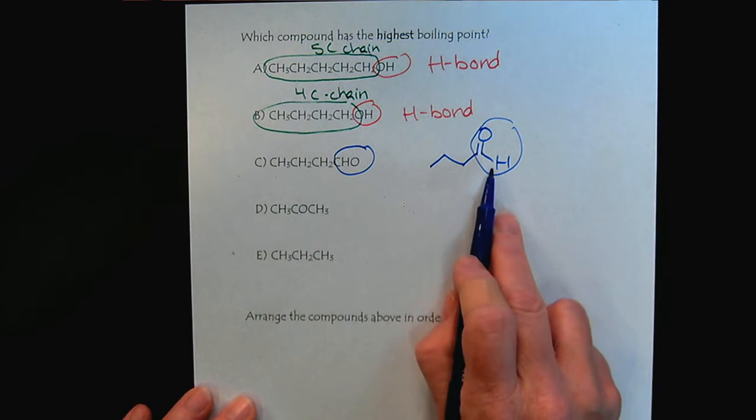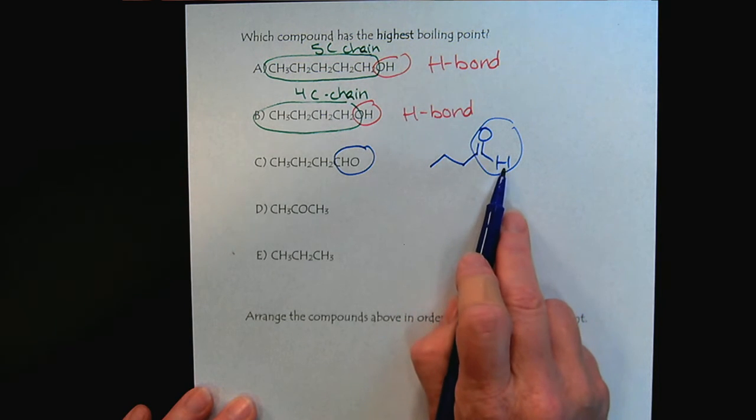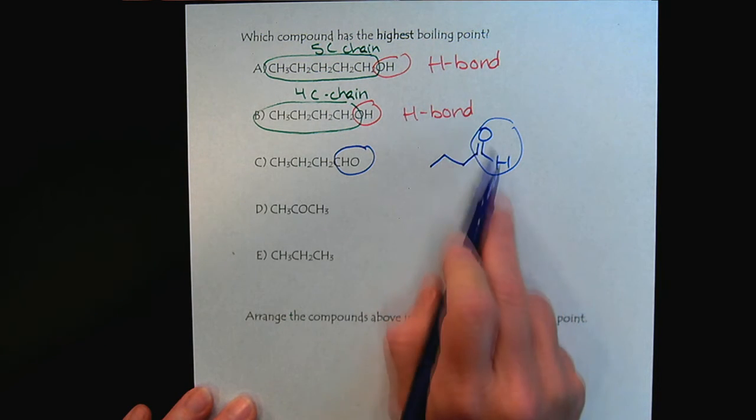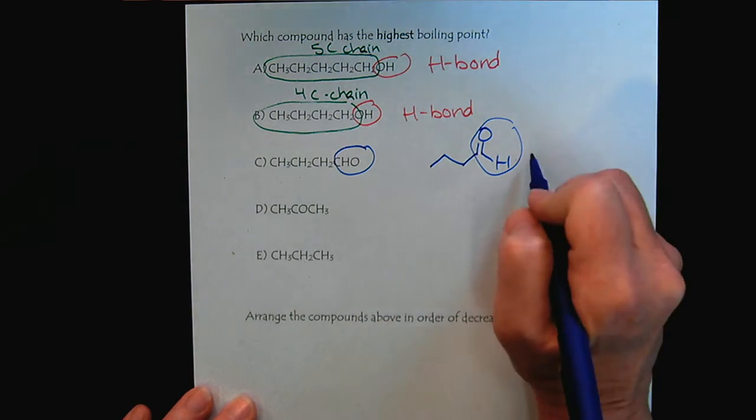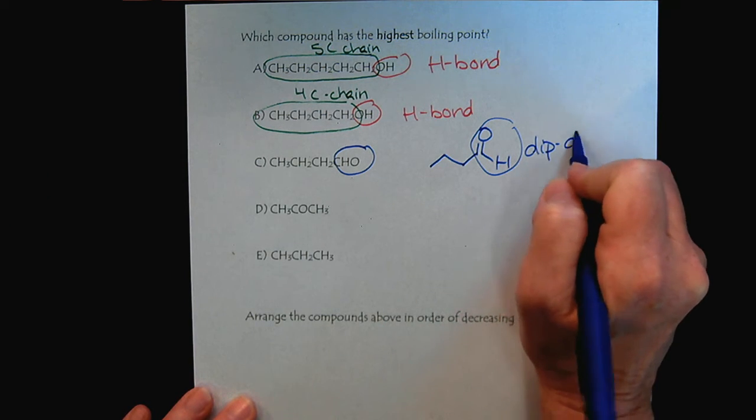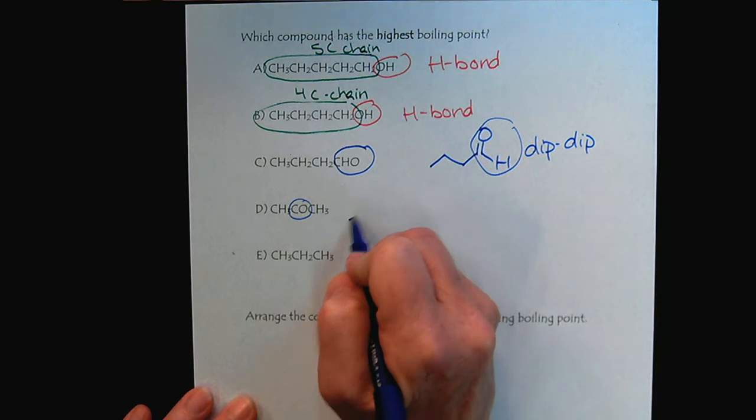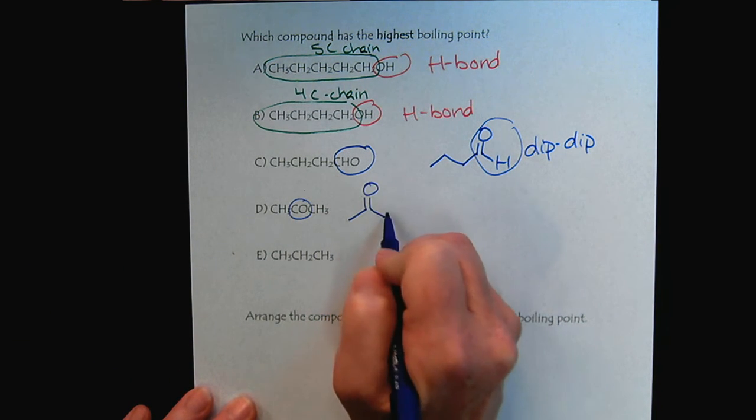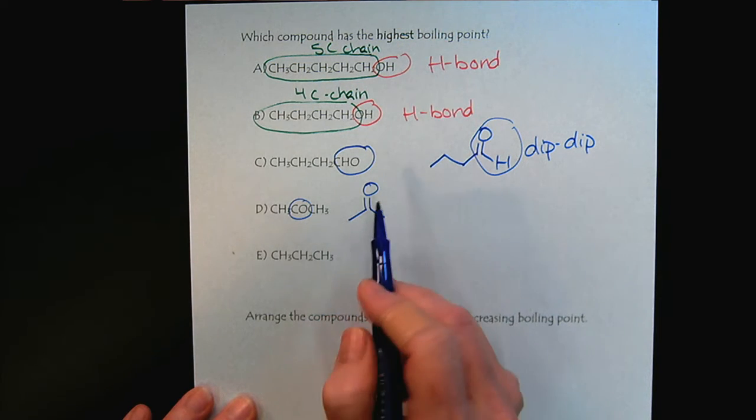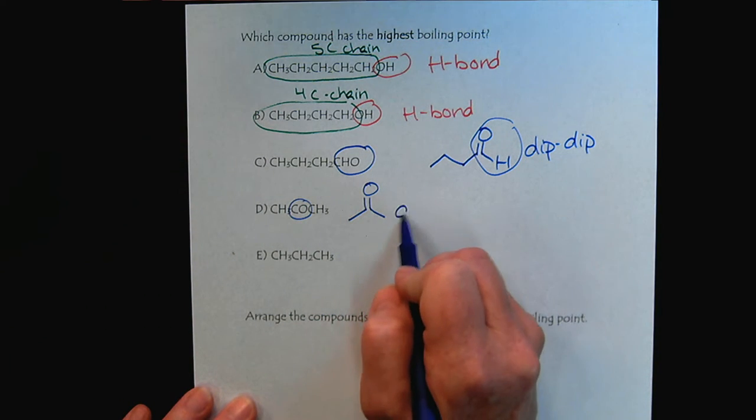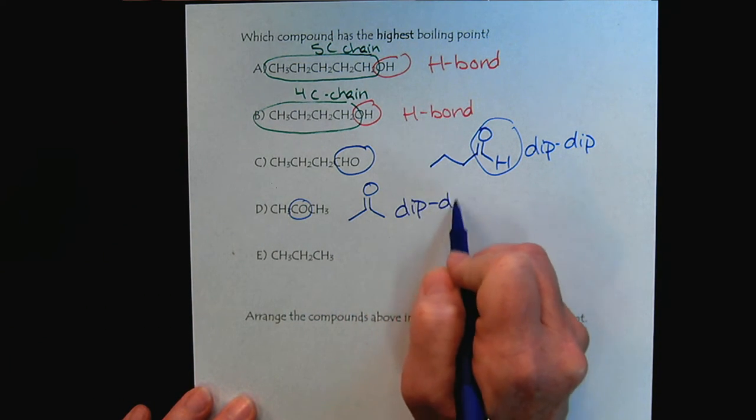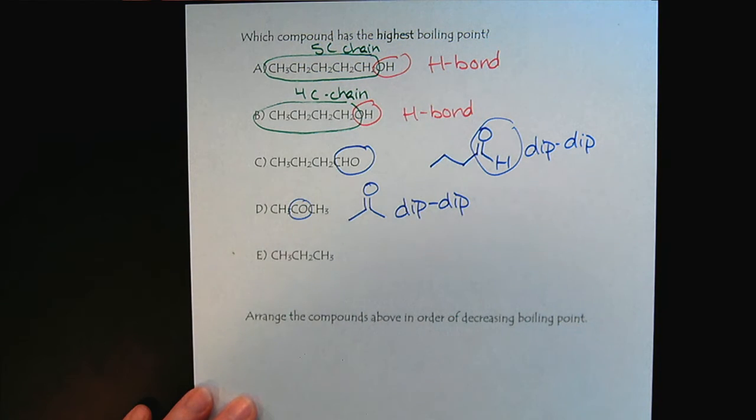So with the aldehydes, we have hydrogen and we have oxygen, but they're not bonded together. So this is an example of dipole-dipole. Here we have another example of a carbonyl. This molecule is acetone. So once again, we have polarity, but it is not H-bonding. So another example of dipole-dipole.